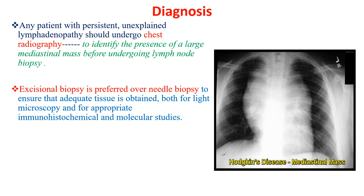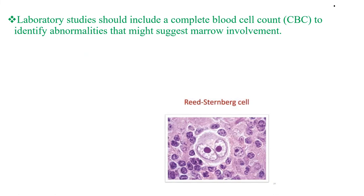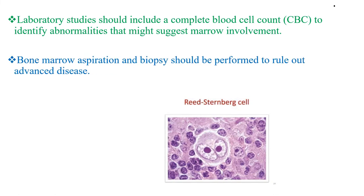Excisional biopsy is preferred over fine needle aspiration cytology or needle biopsy to ensure adequate tissue is obtained for light microscopy and for appropriate immunohistochemical and molecular studies. Always perform excisional biopsy; never perform fine needle aspiration biopsy. Once the diagnosis is established, extent of disease or stage should be determined to allow selection of appropriate therapy. Laboratory studies, including complete blood count and bone marrow aspiration and biopsy, should be performed to assess bone marrow involvement.